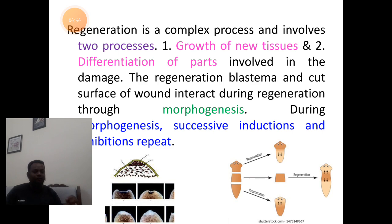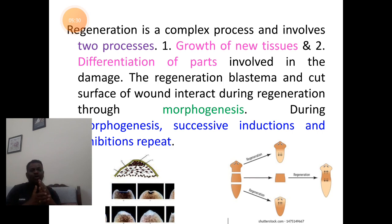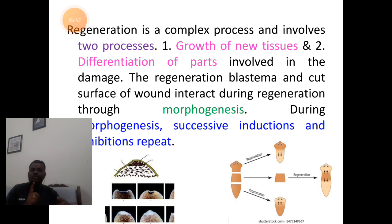During the process of morphogenesis, two major processes occur: number one is induction, where cells are triggered to form or regenerate the organ; and number two is inhibition, where there is stoppage or blockage of the morphogenesis process. Successive induction and inhibition processes occur to form the regeneration of the amputated region.